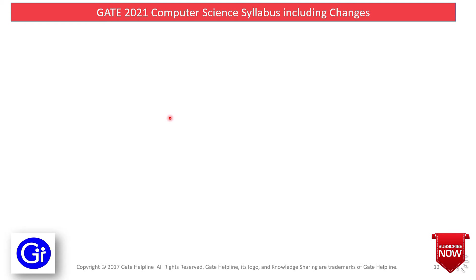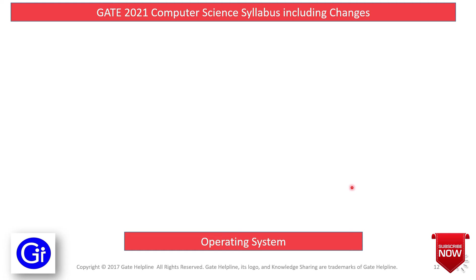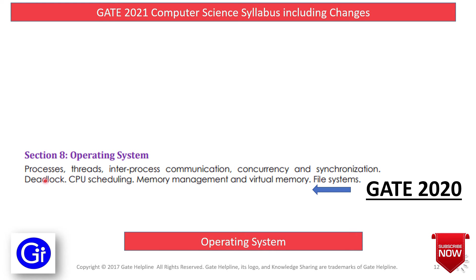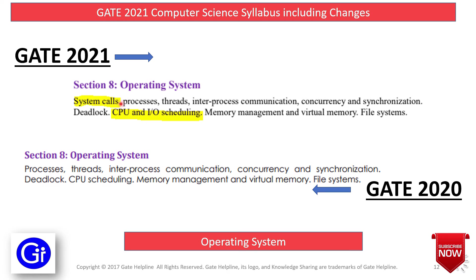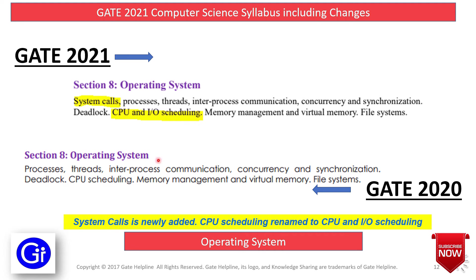The next subject is Operating Systems. The GATE 2020 syllabus comprises Processes, Threads, Inter-Process Communication, Concurrency and Synchronization, Deadlock, CPU Scheduling, Memory Management and Virtual Memory, and File Systems. In GATE 2021, there is an addition of System Calls, and CPU Scheduling is renamed to CPU and I/O Scheduling.